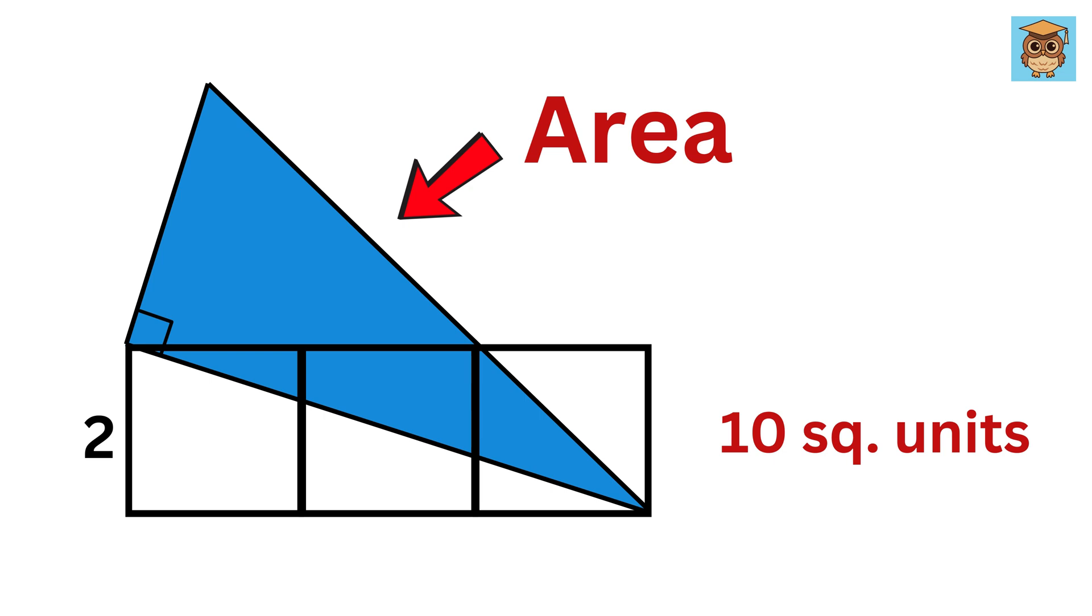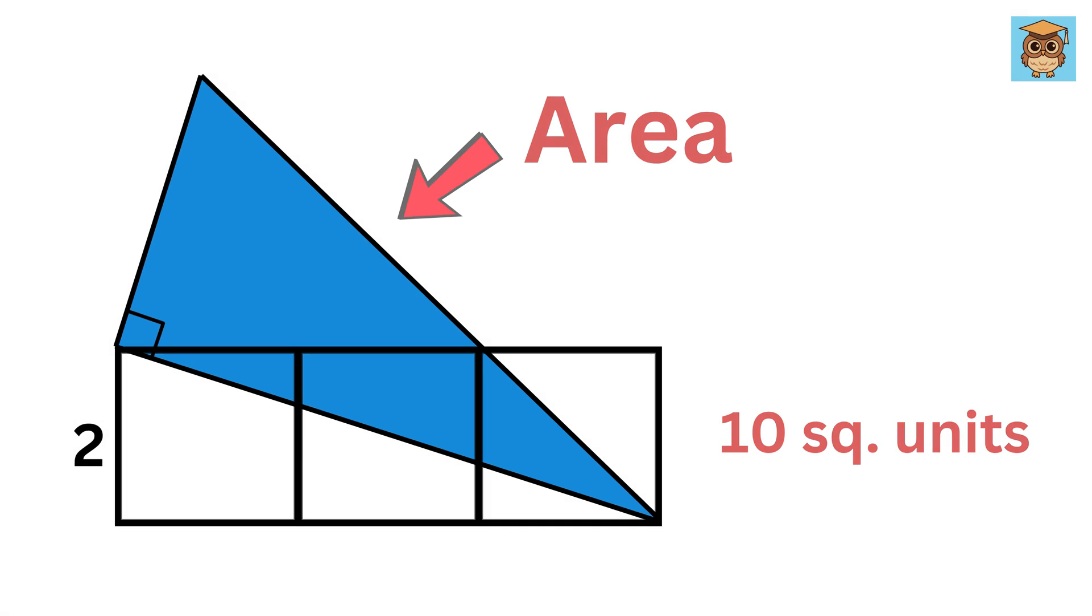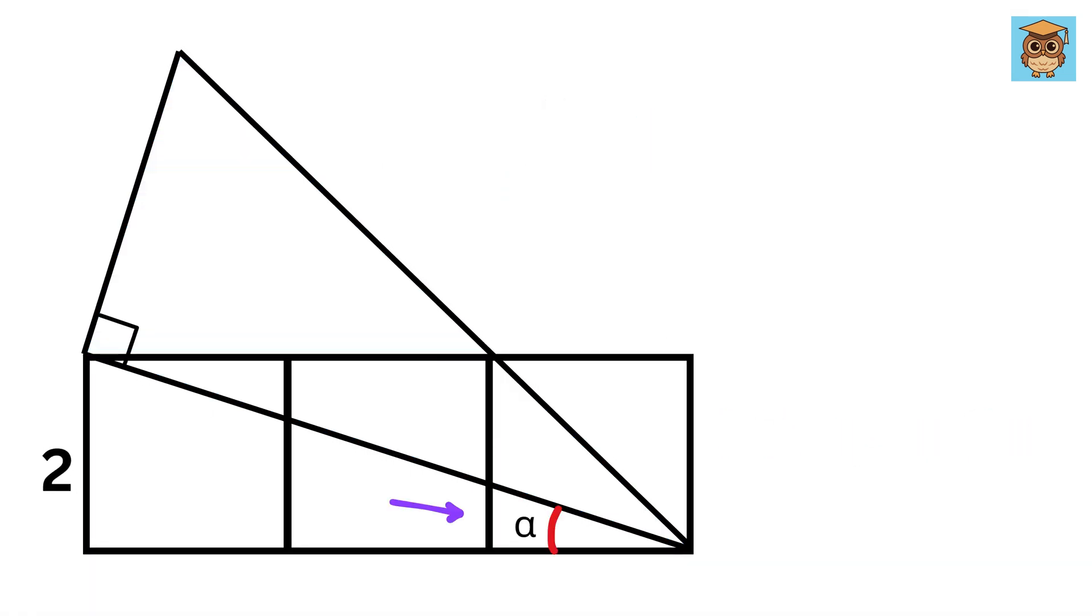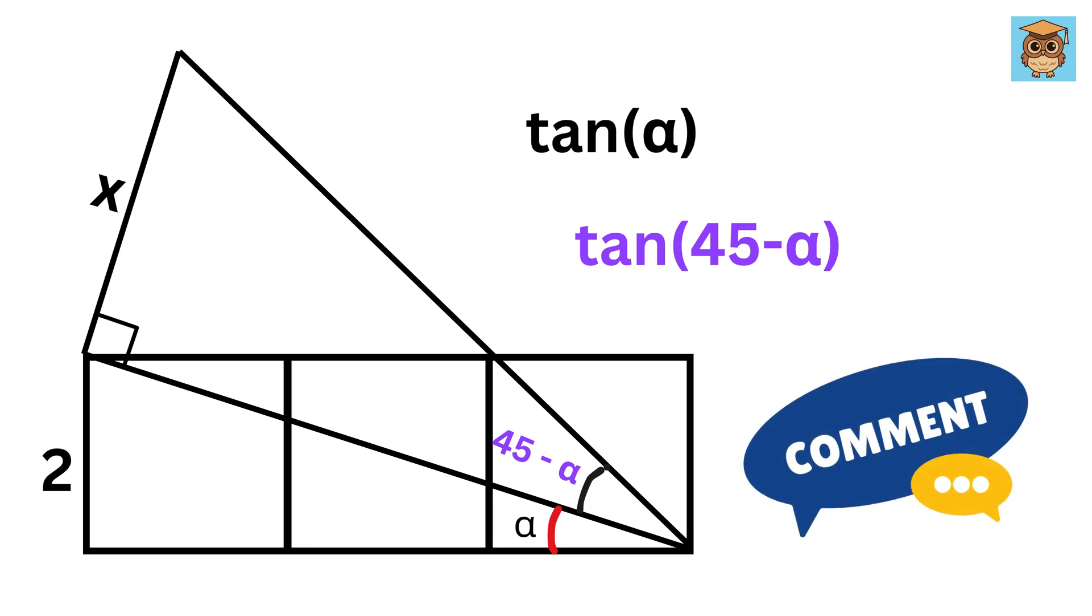Now can you solve the same question using any other method? Like the one I have in mind is using trigonometry. Use the following hint if you want: call this angle as alpha and this side as x. Now since this is 45 degrees, so this will become 90 minus 45 minus alpha, or 45 minus alpha. Lastly, use tan of alpha and tan of 45 minus alpha to find x and you are done.